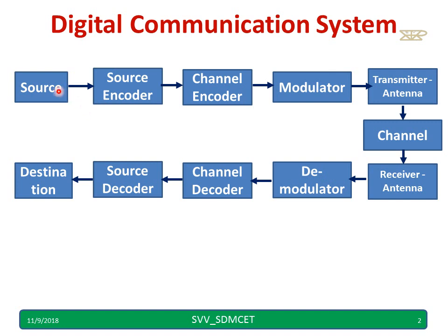The digital communication system has these blocks: source, source encoder, channel encoder, modulator, transmitter, antenna, channel, receiver antenna, demodulator, channel decoder, and source decoder.